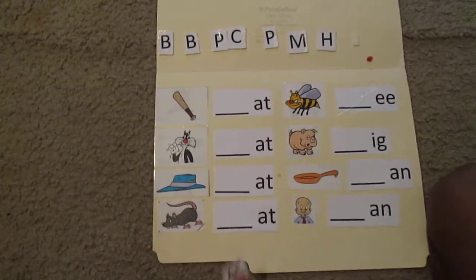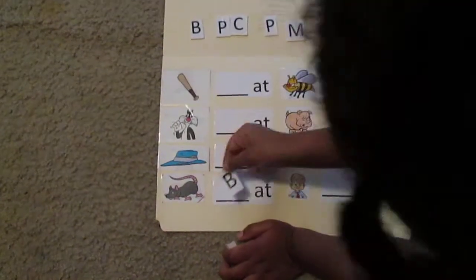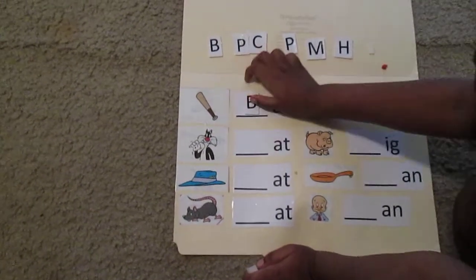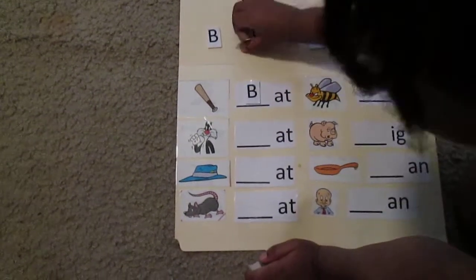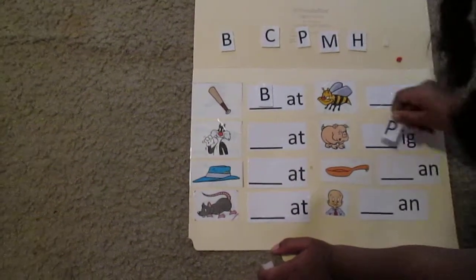So what I have here is a little sight word game that I created for my daughter. She's three, using an old phonics book with pictures in it and just a little bit of imagination here. What I did was, as you can see,